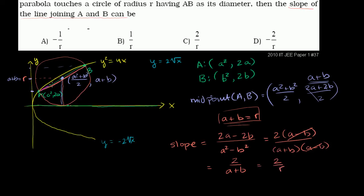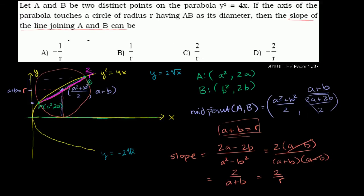So the slope of this line is 2 over r. Now you might be tempted to say the answer is C. But this is actually a multiple correct answer problem. So you can actually have multiple choices here. We want to make sure this isn't the only answer, and it's not.